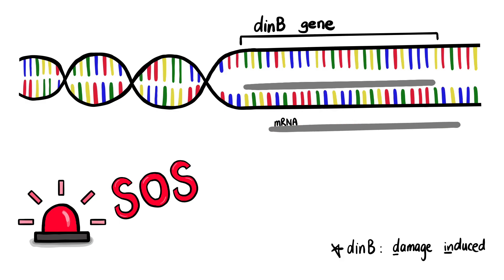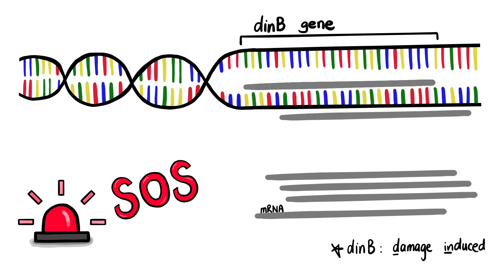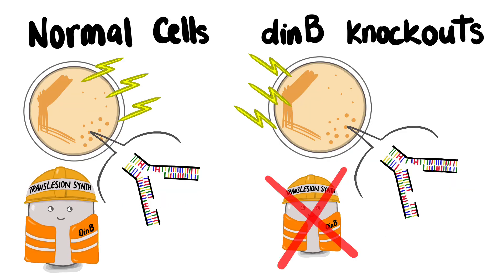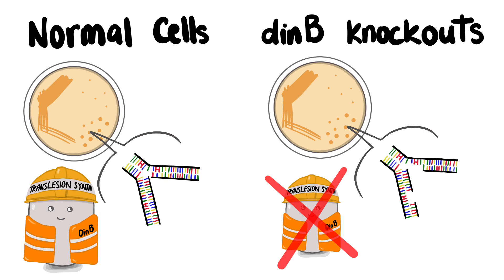Scientists later found that during the E. coli SOS response, transcription of the DIN B gene increased massively. And without the DIN B protein, translesion synthesis didn't work, and the bacteria didn't survive.